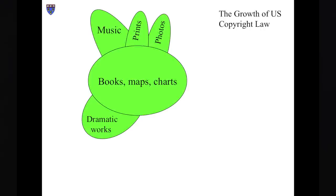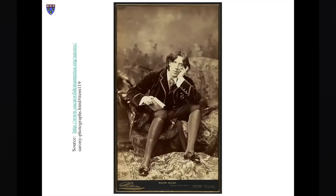Photographs were added by statute in 1865. As we saw in the first lecture, in 1883, in the Burrow-Giles case, the Supreme Court rejected a constitutional challenge to the addition of photography, but only because this posed studio photo of Oscar Wilde was, in the Court's judgment, a 'useful, new, harmonious, characteristic, and graceful picture.' Gradually, the aesthetic requirement implicit in this ruling was softened, and copyright protection was tacitly extended to photographs of all sorts.